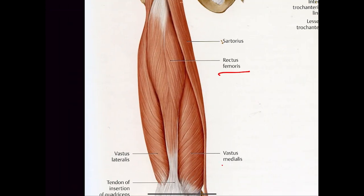So: rectus femoris, vastus medialis, vastus lateralis. Can anyone remember why we use the words medialis and lateralis? What do those mean? Inside, outside — medial and lateral. All they're doing is giving definition to the different types of muscles on either side.